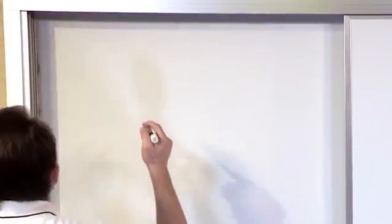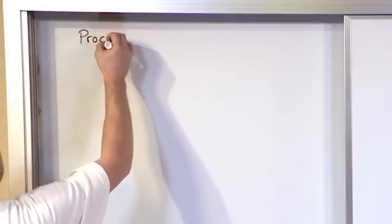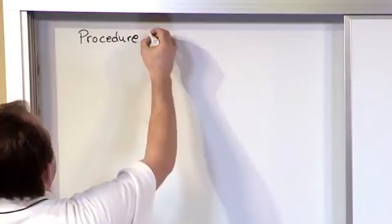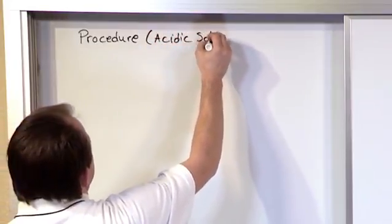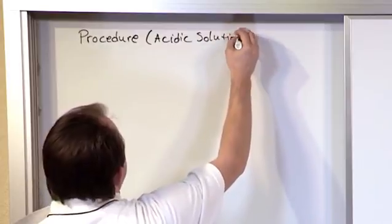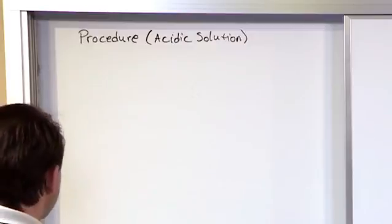So this is the procedure for balancing a redox reaction. Procedure for an acidic solution. And again on your test it'll tell you this reaction is happening in acidic solution. Balance it. And then you'll need to use this method.